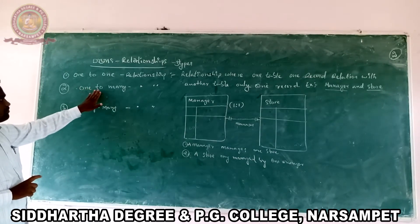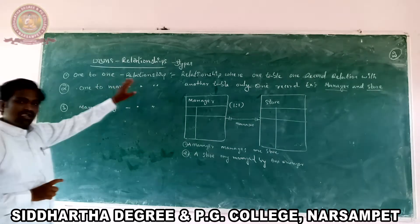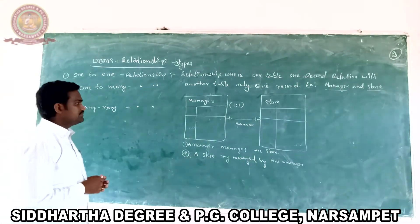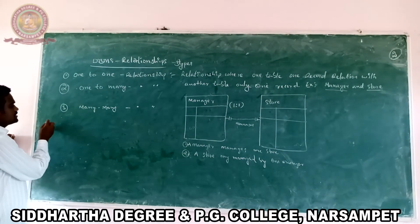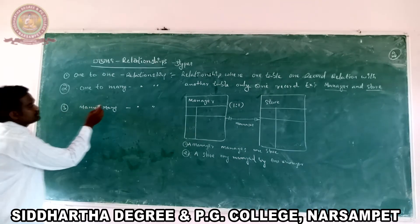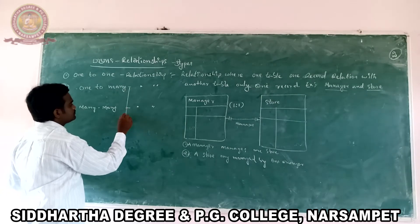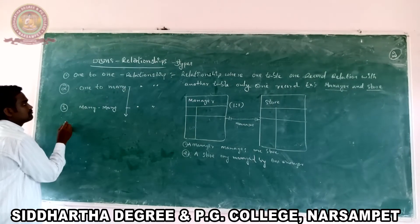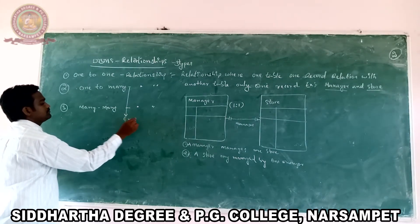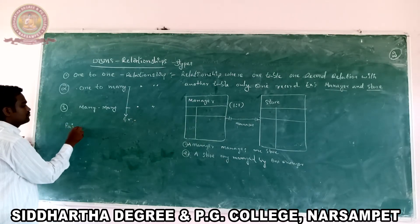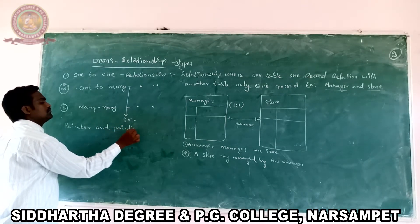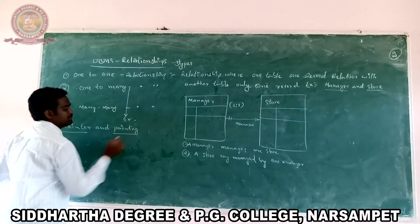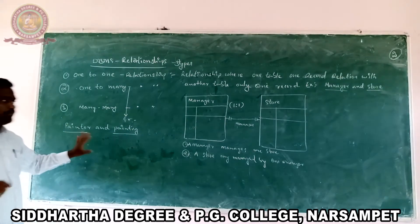At the same time, one store record is related to one manager record. This is called a one-to-one relationship. Next, one-to-many relationship: one record in one table is related to many records in another table. For example, consider the tables painter and painting.